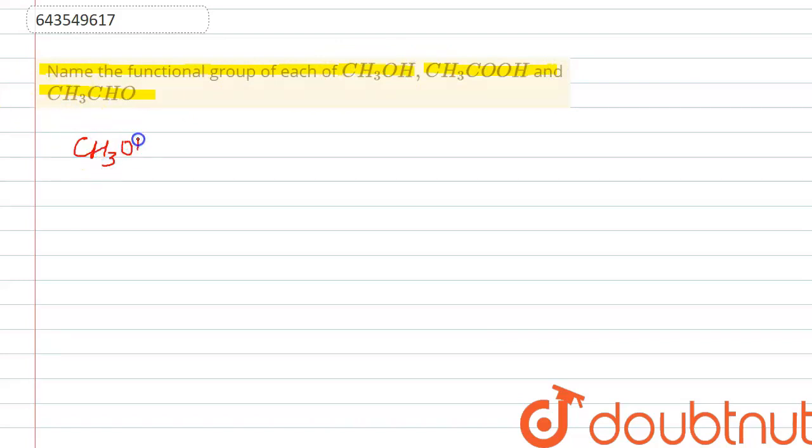The first given compound is CH3OH, which contains this OH group, which is known as the alcohol group, and the name of this compound is methanol.